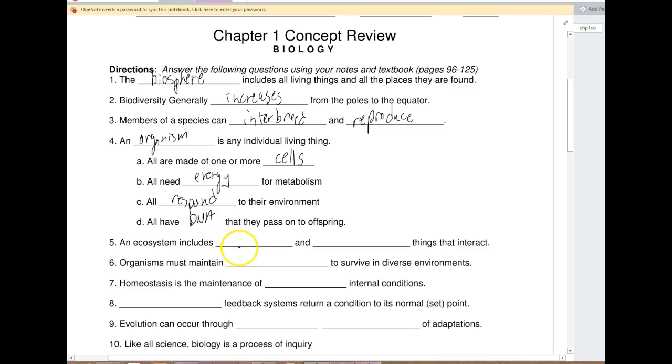An ecosystem includes. We call these biotic and abiotic. Organisms must maintain. Homeostasis.